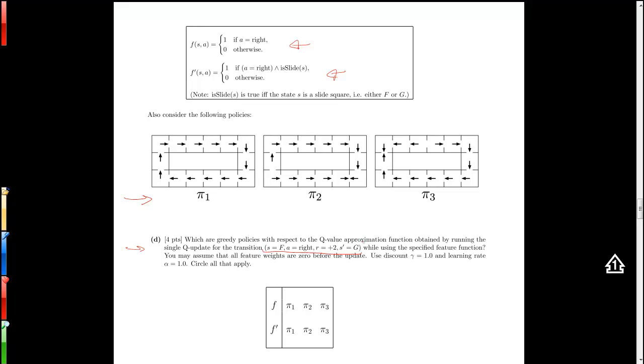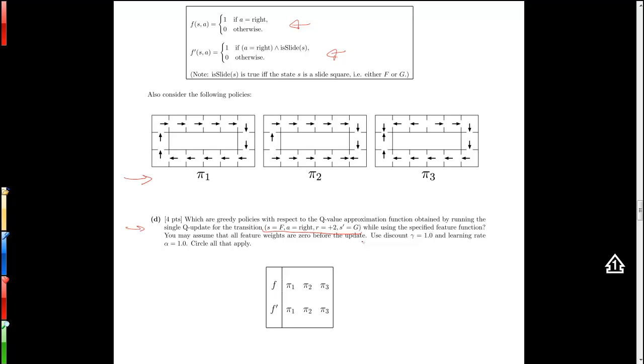Now we're asked to look at the policies which are greedy policies with respect to the Q value approximation function obtained by running the single Q update for the transition given, while using the specified feature function. Make sure that all feature weights are 0 before the update, using gamma equals 1.0 and learning rate alpha equals 1. Now let's go to the Q learning update with function approximation.